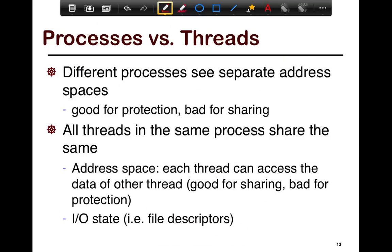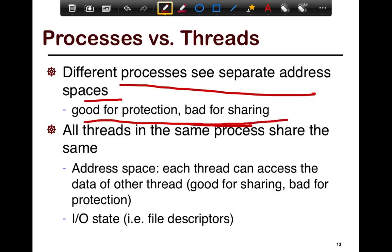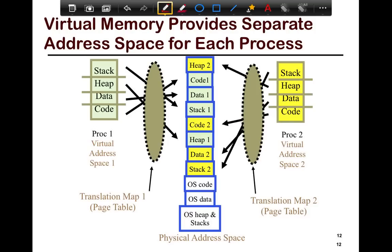Different processes see separate address spaces, which is good for protection but bad for sharing — and this is where threads come in. Sometimes you want to share data between execution entities. For example, a matrix multiplication program may want data to flow from one thread to another, or a browser may need XML data parsed by one thread to flow to the display thread. If each were a separate process, you would have to physically copy data from one heap to another.